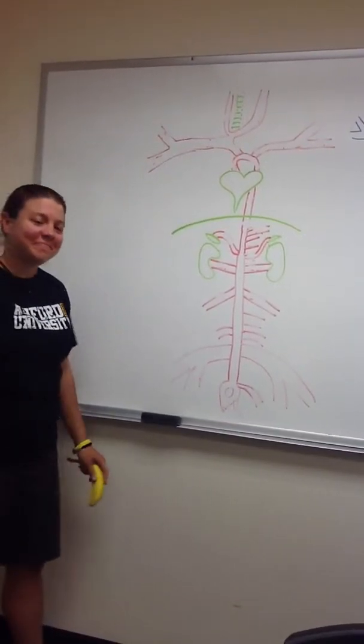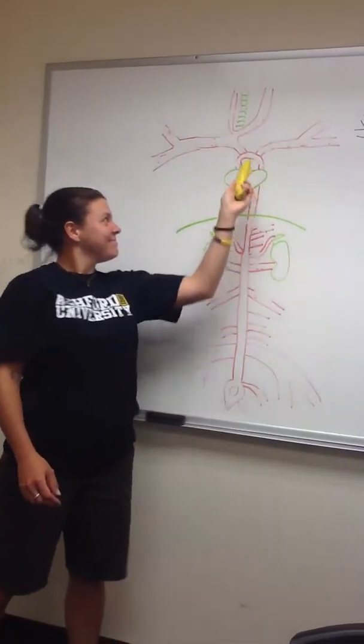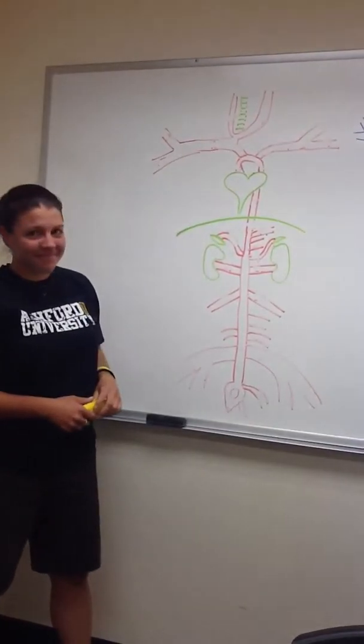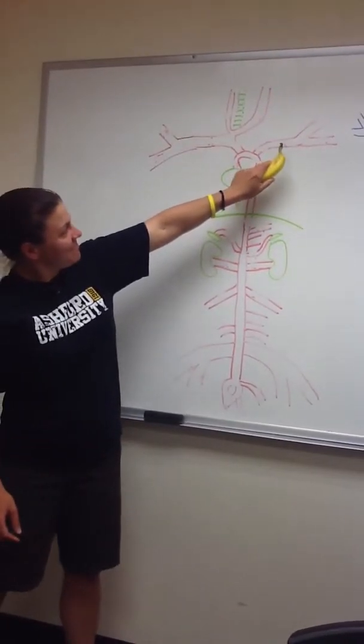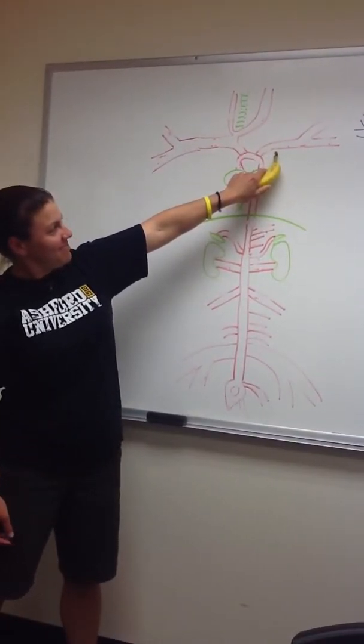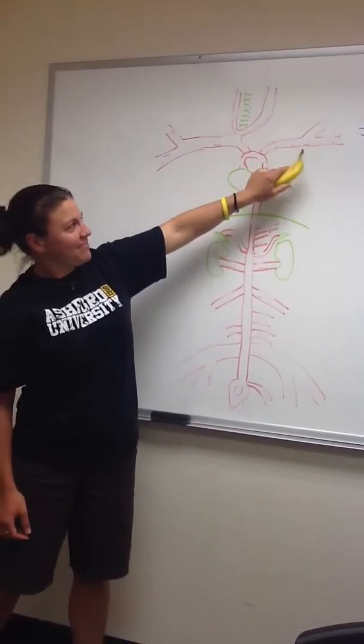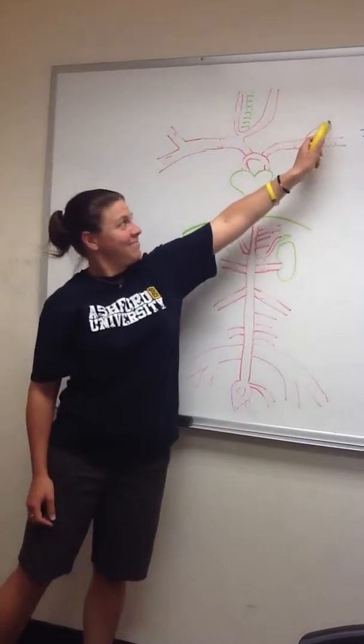So then I backtracked a little bit, and I went back until we came across the left subclavian. And that one, well, that just branched, and it turned into the left auxiliary and then the left brachial. And from there, it went into the left radial and the left ulnar.